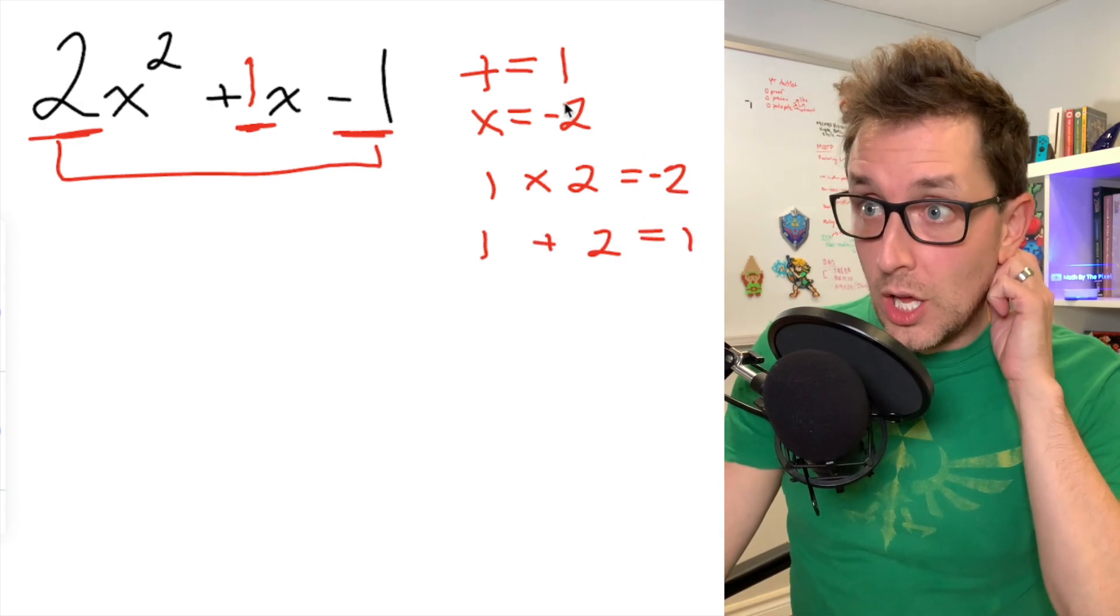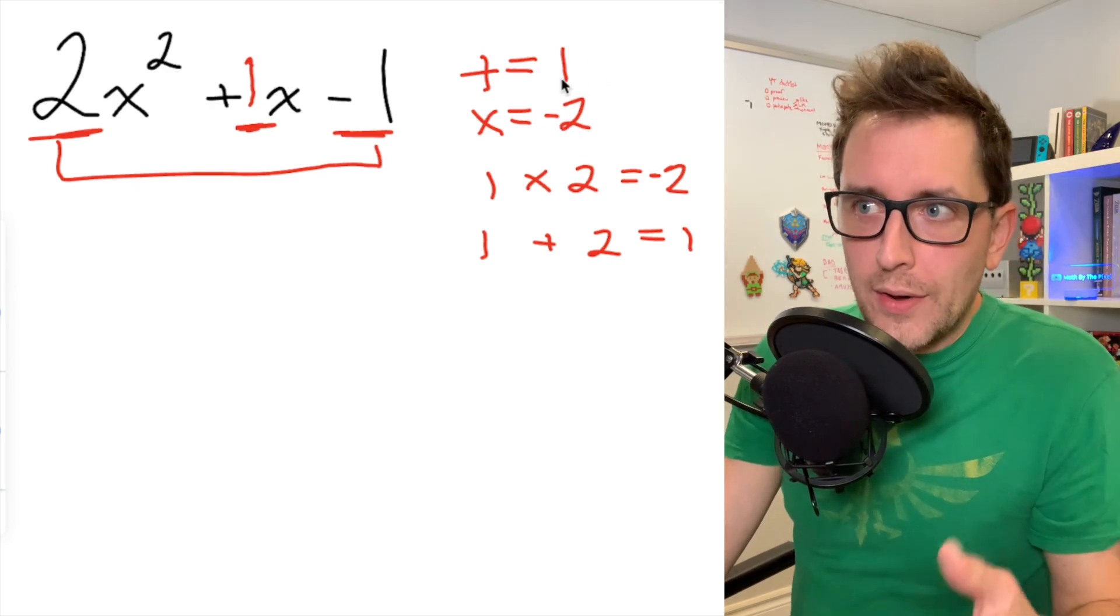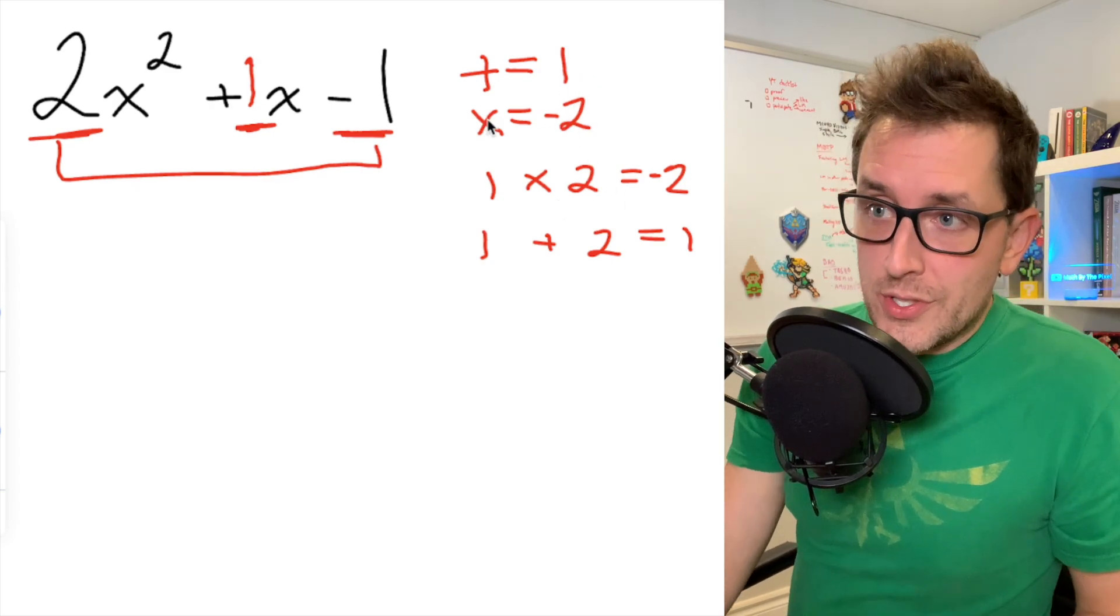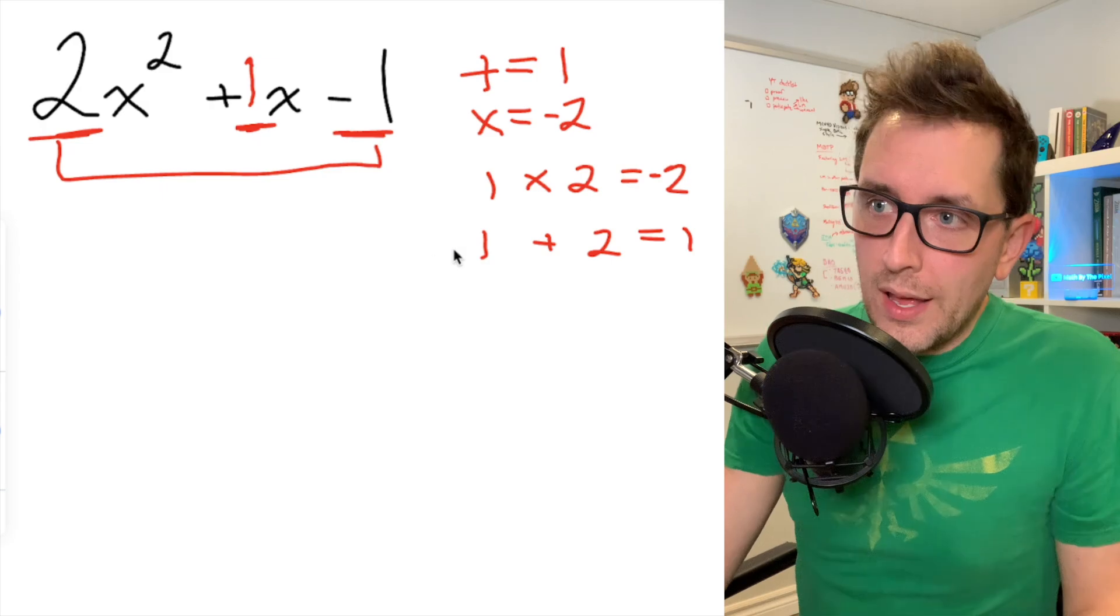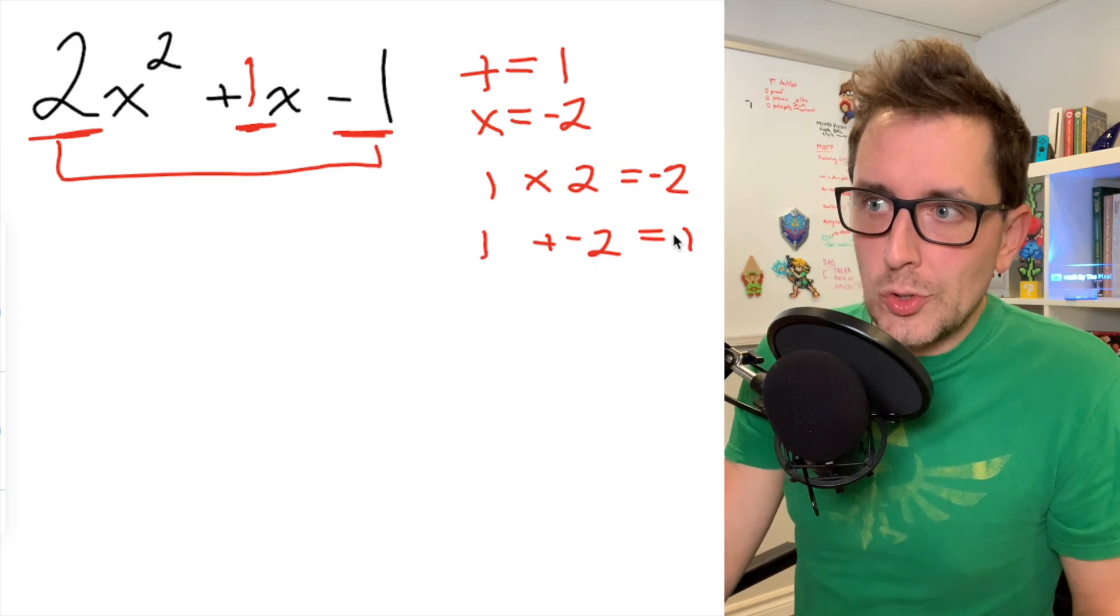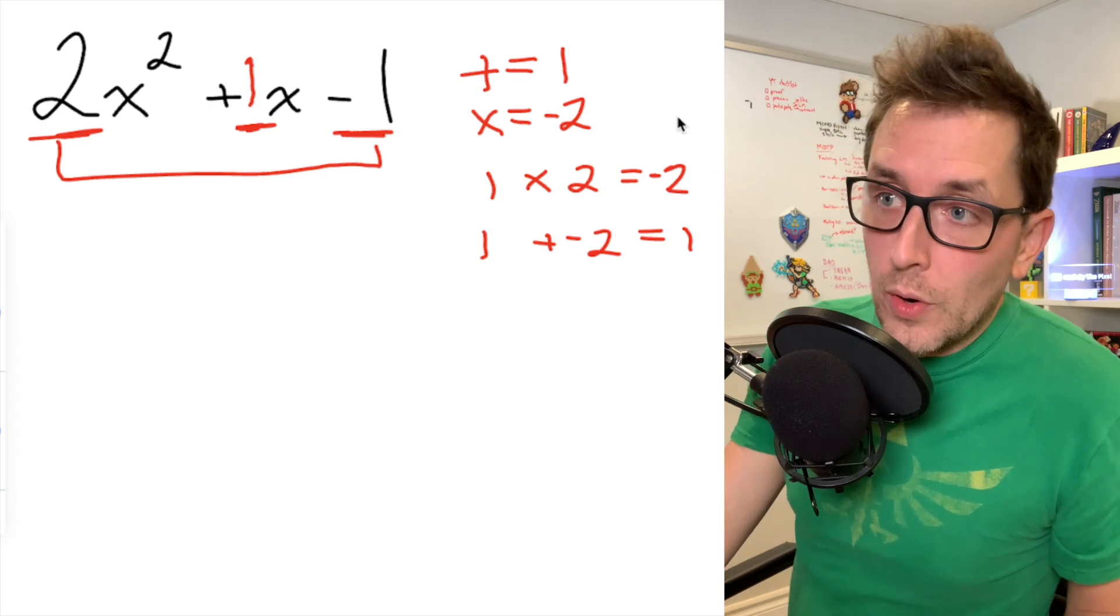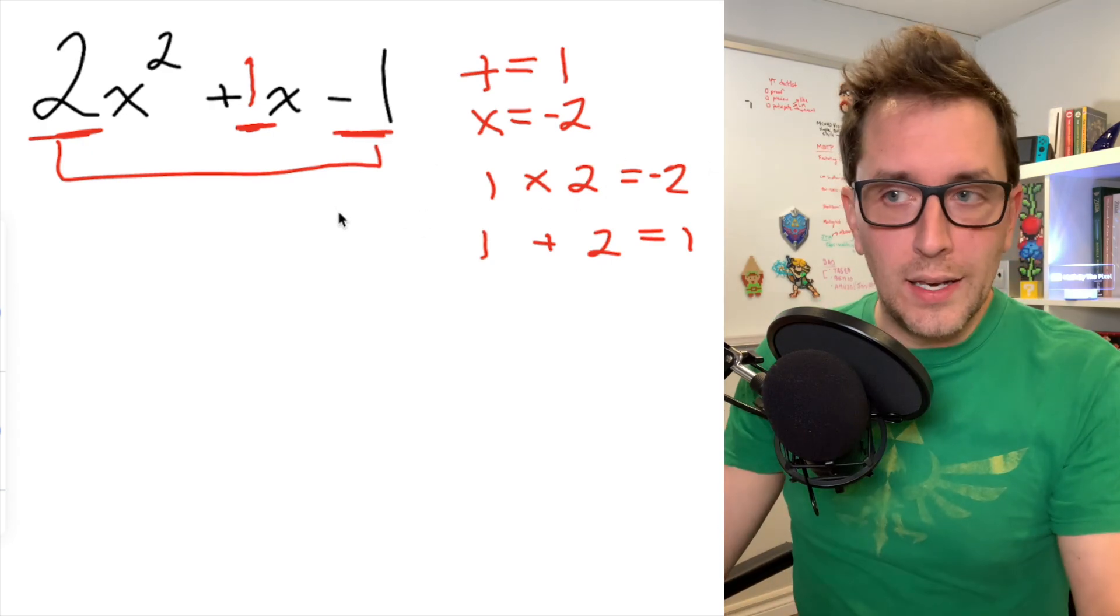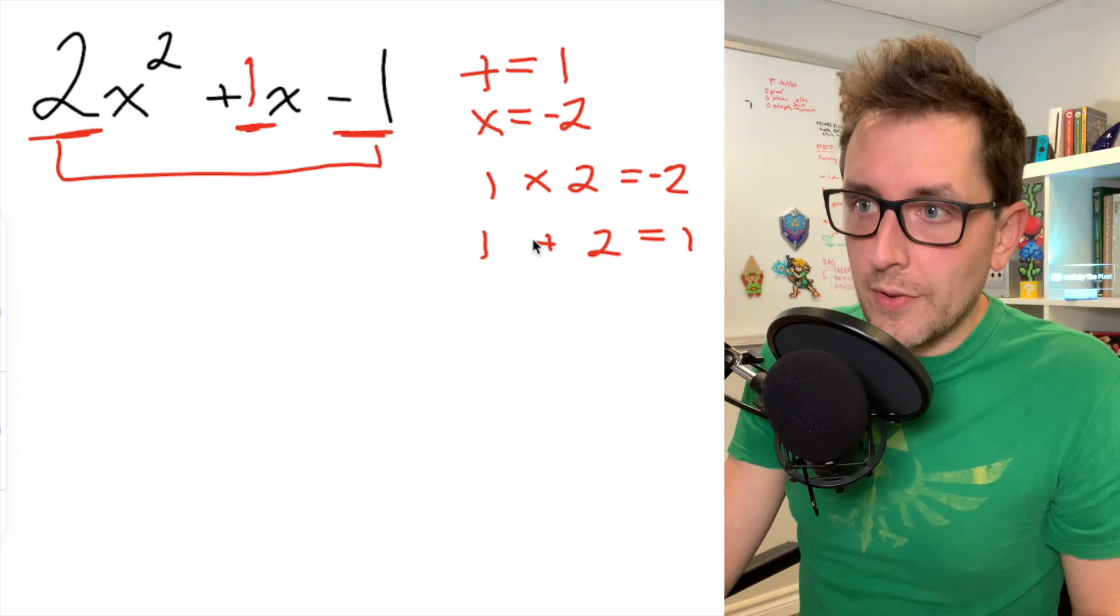That's my second condition. I need to multiply to get -2, but I also have to add to get 1. What I like to do is just ask myself, what if? What if I made the 2 negative? Well, is 1 plus -2 equal to 1? It is not. So I know that I can't make 2 negative to make these conditions satisfied.